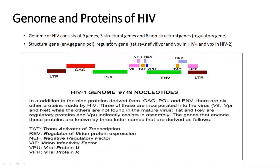The structural genes are envelope (ENV), GAG, and POL. The regulatory genes are TAT (transactivator of transcription), REV (regulator of virion protein expression), NEF (negative regulatory factor), VIF (virion infectivity factor), VPU (viral protein U), and VPR (viral protein R). You need not remember all these names — just have a general idea of the structure and the many proteins packaged with the virion.